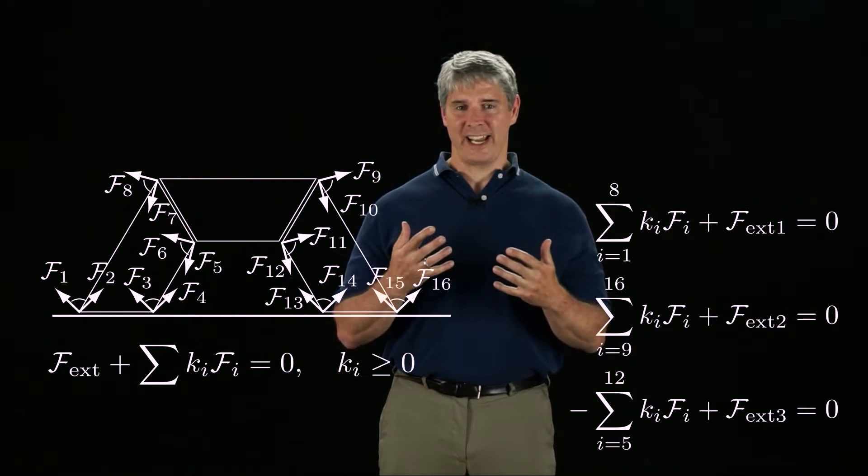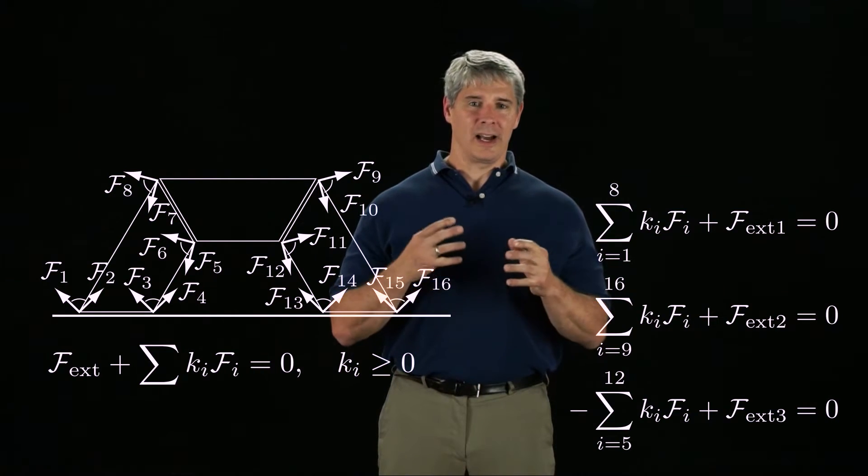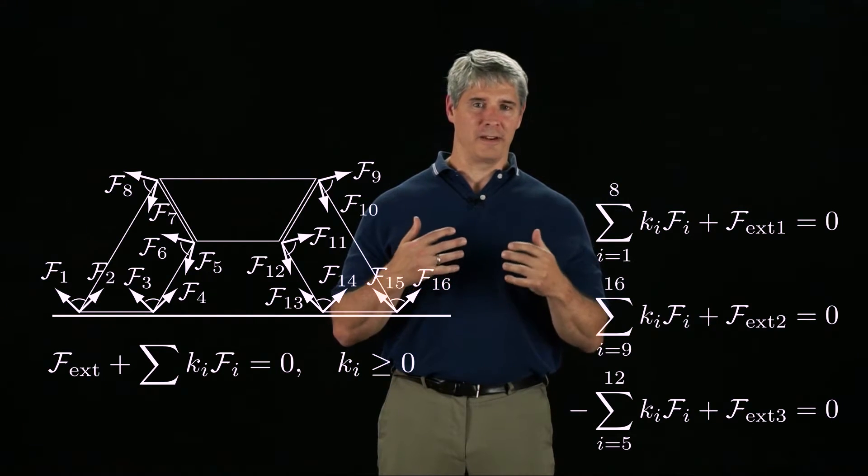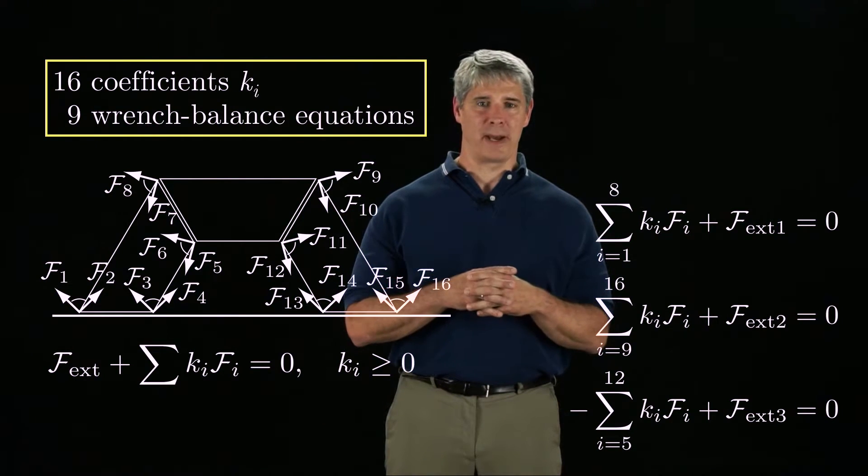Similarly, the coefficients k9 through k12 are the same as those we used for our analysis in the right block. Counting the coefficients and the constraints, we have 16 non-negative coefficients to satisfy nine wrench-balance equations.